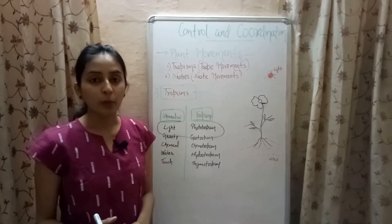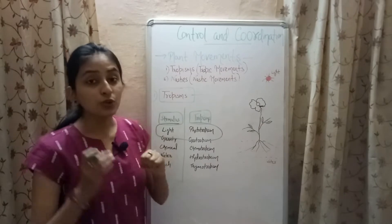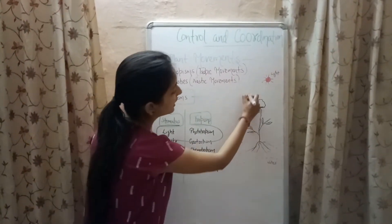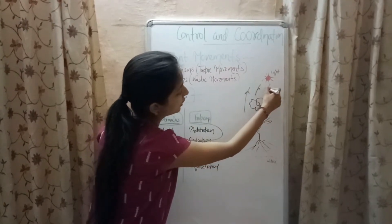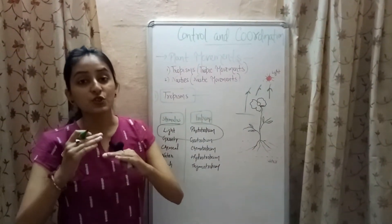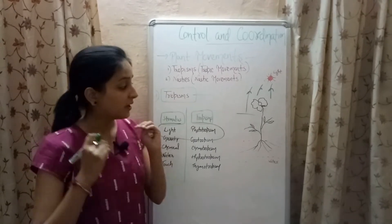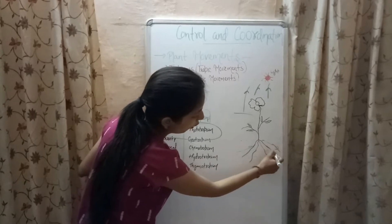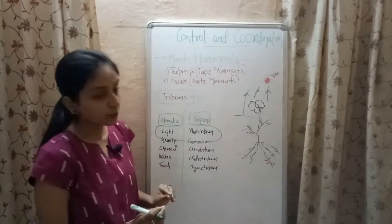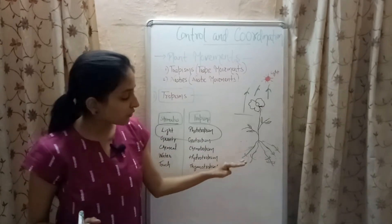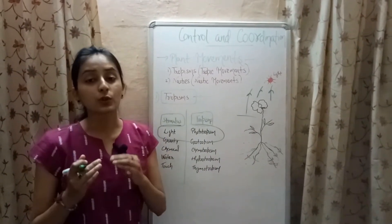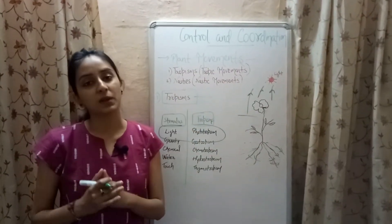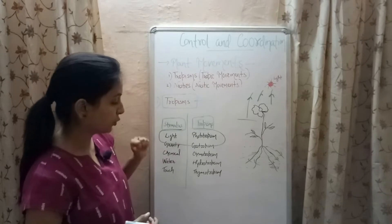In phototropism the stimulus is light. The stem always grows in the upward direction — toward light — so the stem shows positive phototropism. Roots always grow in the downward direction, opposite to the direction of sunlight, so roots show negative phototropism.